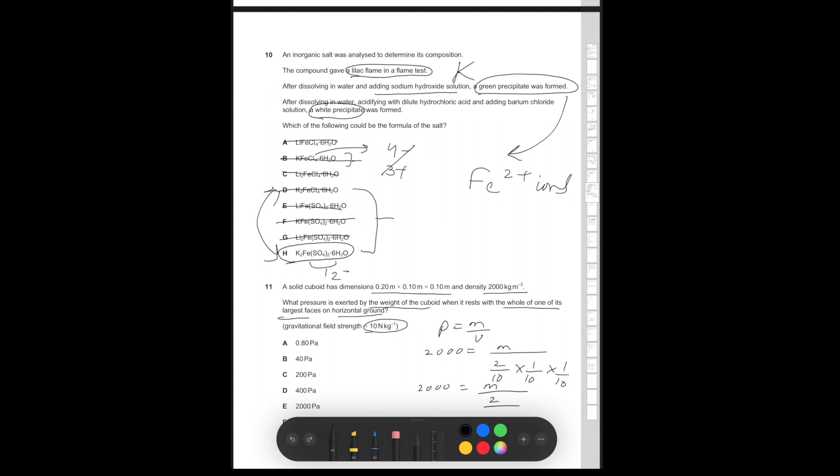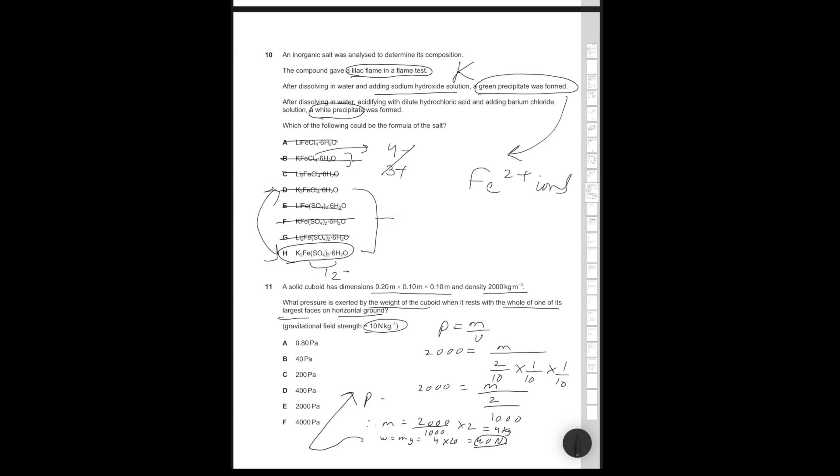So 2,000 is equal to M divided by 2 over 1,000. Therefore, M is equal to 2,000 over 1,000 times 2, which is simply going to be 4 kg. Therefore, W is equal to Mg, which is equal to 4 times 10, which is equal to 40 newtons.